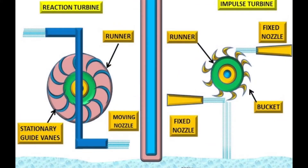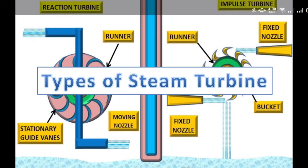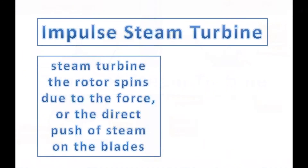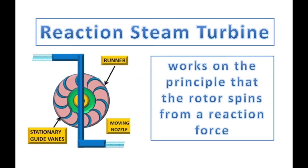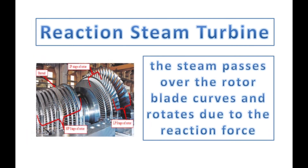Let's proceed to the two general types of the steam turbine: the impulse and the reaction turbines. In the impulse steam turbine, the rotor spins due to the force or direct push of the steam on the rotor blade bucket. As the illustration shows, the steam is directly pushing the rotor bucket by the use of the steam nozzle, while the reaction steam turbine spins and works from the reaction force when the action force of the steam passes through the rotor blade curves.